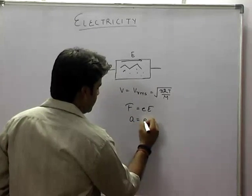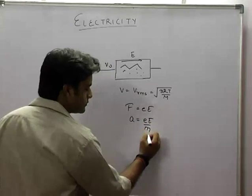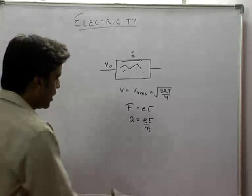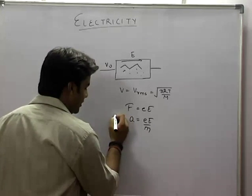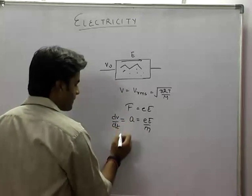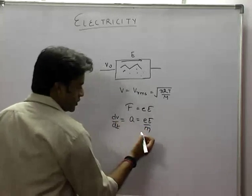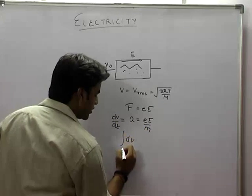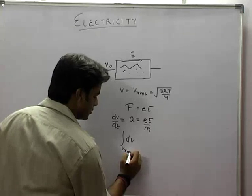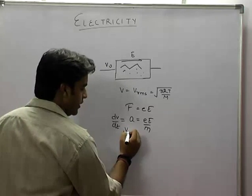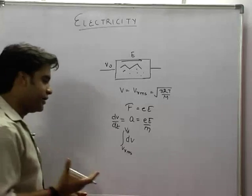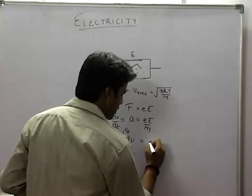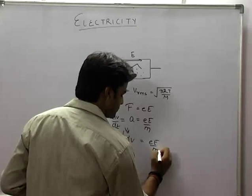Now, acceleration is e into E by m. If I write dv by dt and integrate this, dv integration from v_rms to vd drift velocity equals e into E by m into dt.